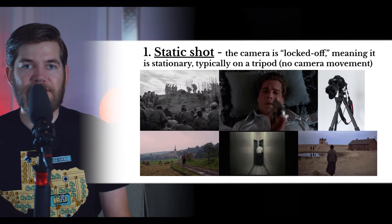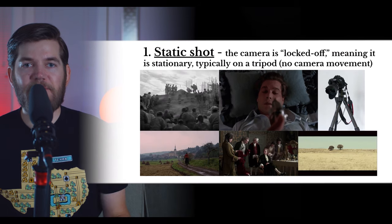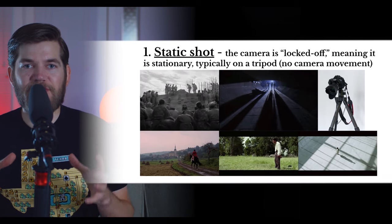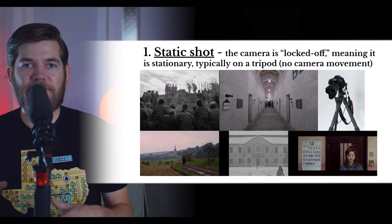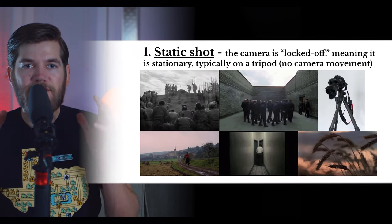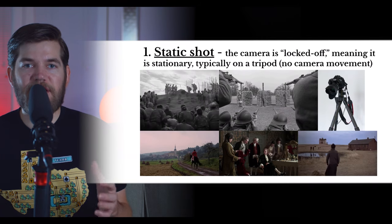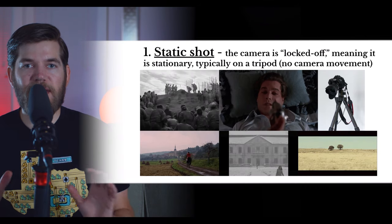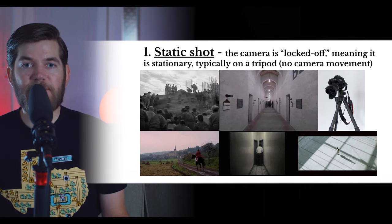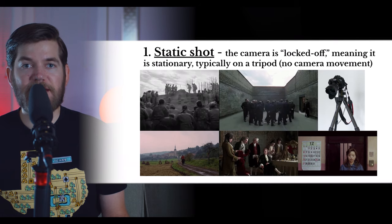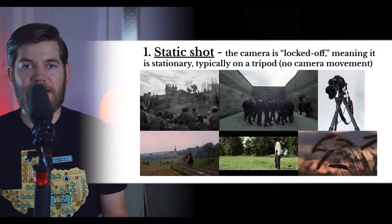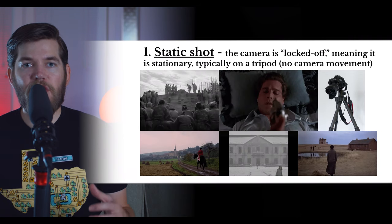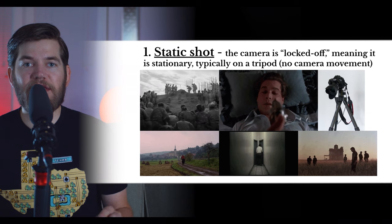Our next term refers to zero camera movement: the static shot. The camera is locked off, meaning it's stationary. When you have the camera on a tripod and it's locked off, you have all of the knobs turned tight so that the camera can't move at all. The camera in a static shot is typically on a tripod — there's no camera movement at all. As you can tell, many beautiful compositions can be achieved with a static shot.